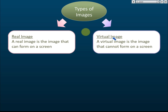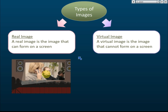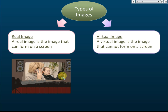There are two types of images: real image and virtual image. It's very important to know the difference. A real image is the image that can form on a screen. For example, in a cinema, the projector projects pictures onto the screen. The image is formed on the screen, and this type of image is called a real image.